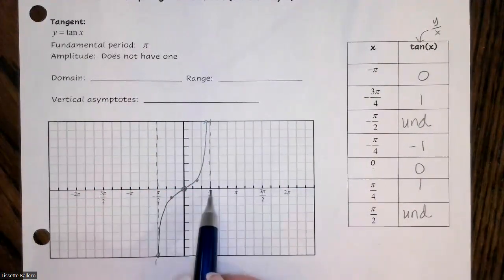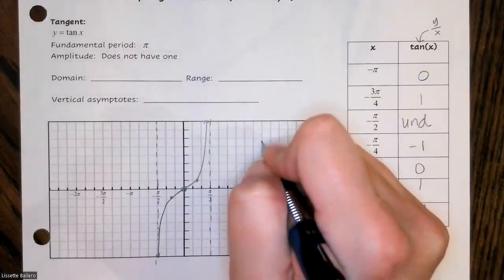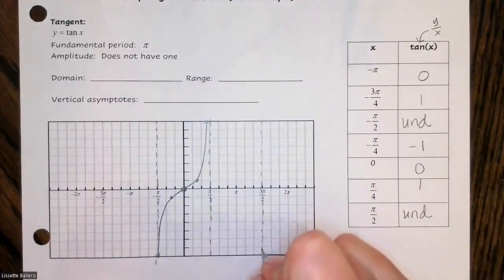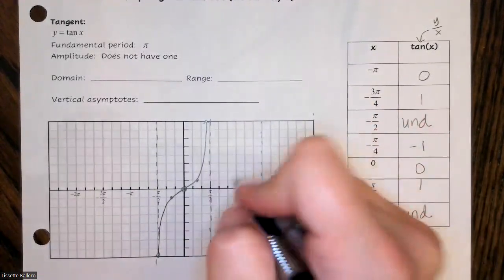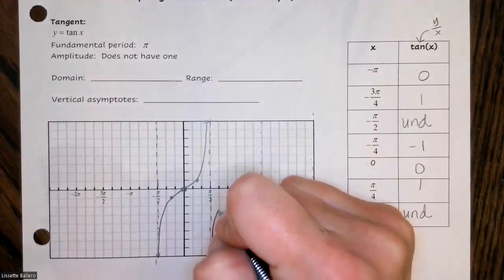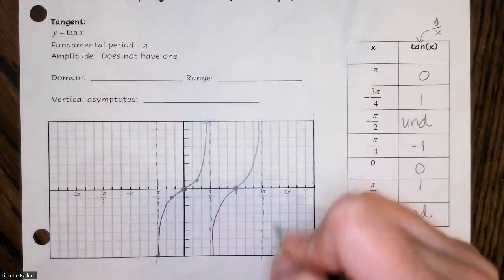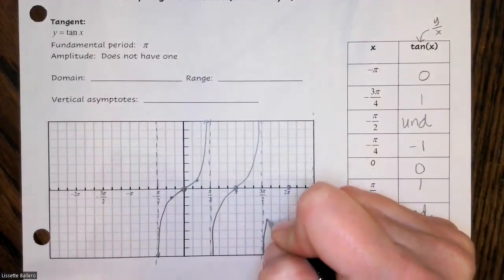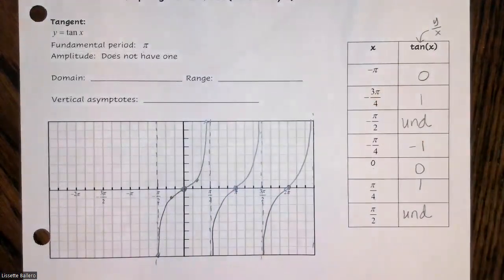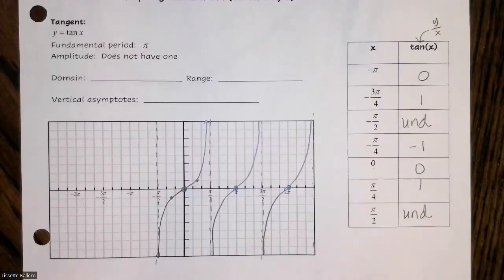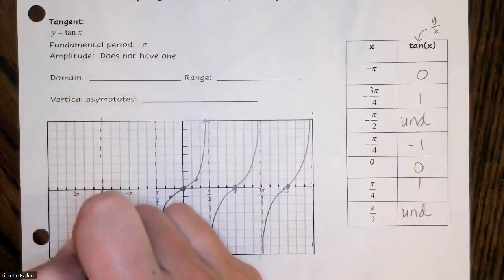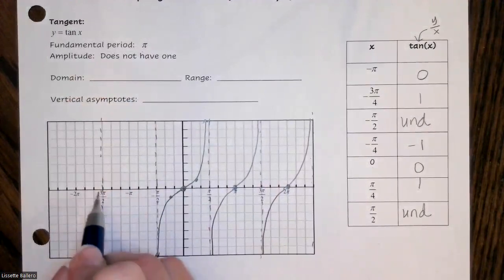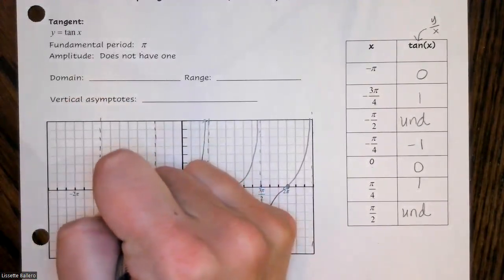Our period is one π, so every π I'm going to have a vertical asymptote. In the middle it's going to be on the x-axis, taking the same shape — starting at the bottom, getting close to the asymptote, then crossing over. That's three cycles, which is acceptable for the test. I'll graph all the way to the end; another vertical asymptote every π distance.